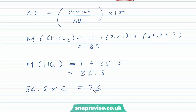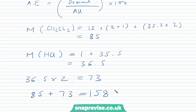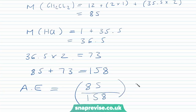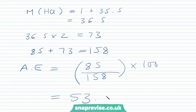The total mass of our products is 85 added to 73, accounting for the two moles of HCl and one mole of dichloromethane, giving a total of 158. Now we substitute into the atom economy equation: 85 divided by 158, multiplied by 100, giving us 53.8%.